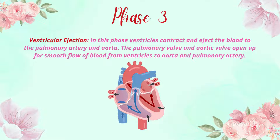As you can see in the picture, once the ventricles receive blood from the atria through the atrioventricular valves, the ventricles begin to contract and eject blood, transferring it from the ventricles to the aorta and pulmonary artery. The pulmonary and aortic valves open for smooth blood flow, while the bicuspid and tricuspid valves are closed since they have no role in this phase.